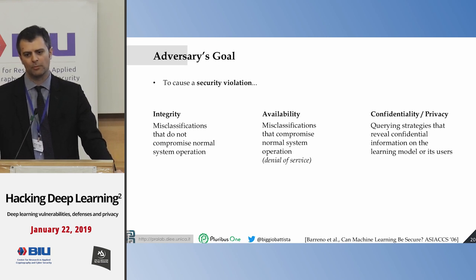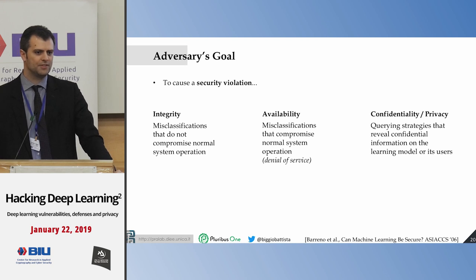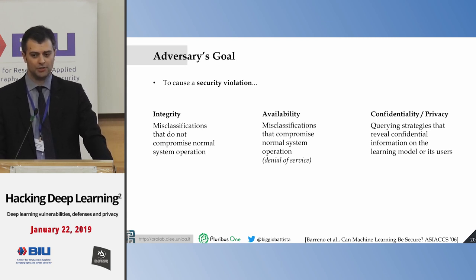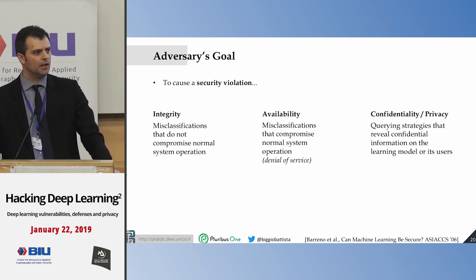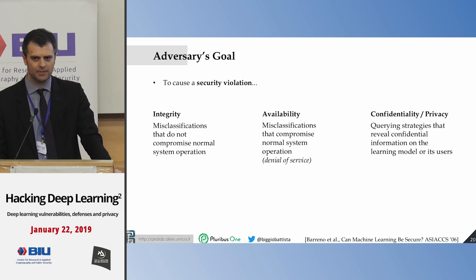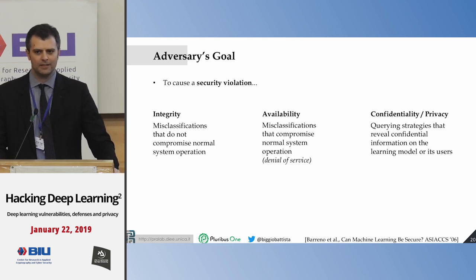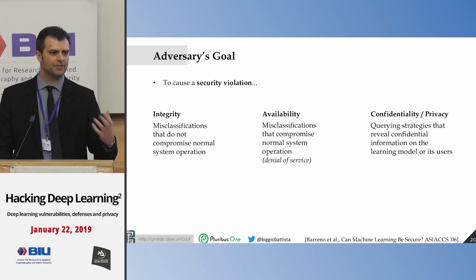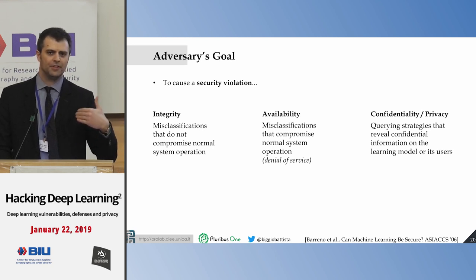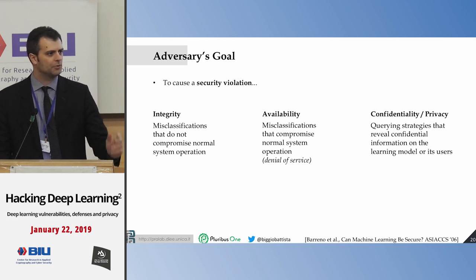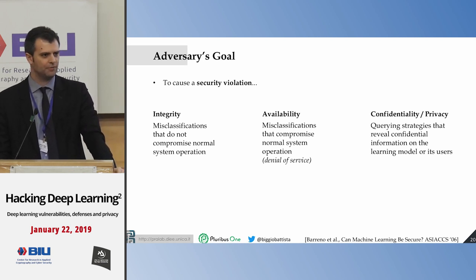Availability violations aim to purposely block legitimate users from using the system — essentially a denial of service. Confidentiality or privacy violations involve attacks that aim to get confidential or private information from the system or its users. For example, by querying a face recognition system multiple times, an attacker may be able to reconstruct images of users' faces, inferring private information.